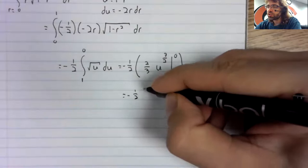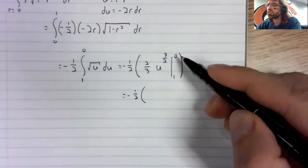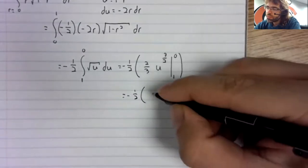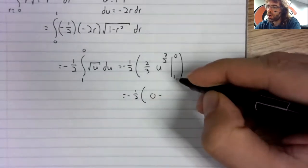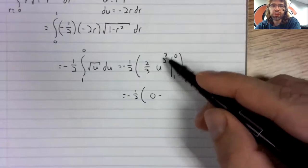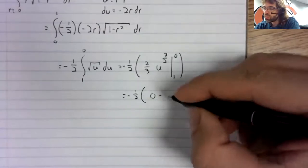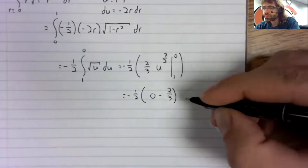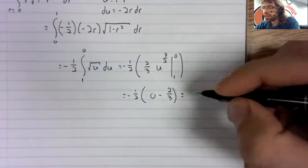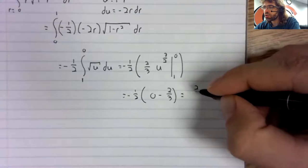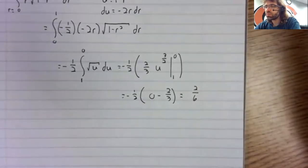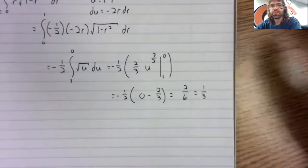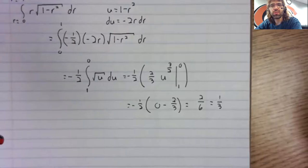And a 2 thirds out front. And now what? Well, when we put 0 in here, we get 0. When we put 1 in here, 1 to the 3 halves is 1. Negative 1 half and negative 2 thirds give us positive 2 sixths, which is also 1 third.